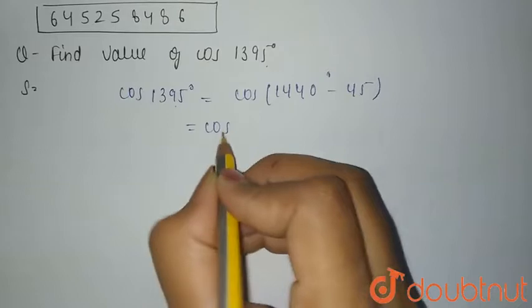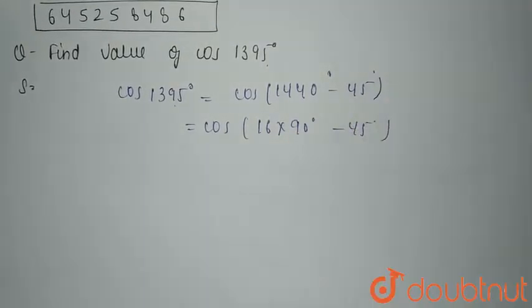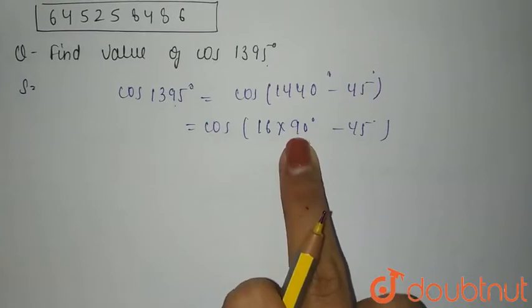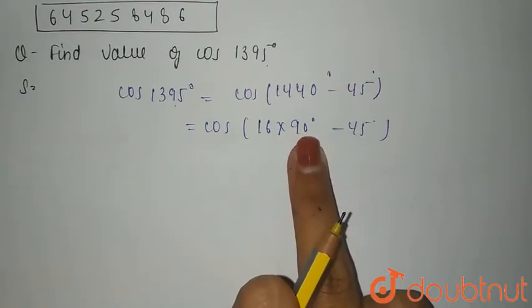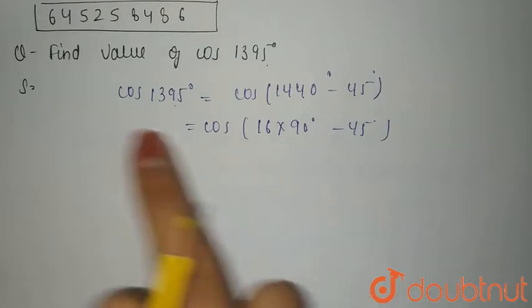As it is, this is the multiple, even multiple of 90 degree. And when it is even multiple of 90 degree, you can say that it is cos of 45 degree.